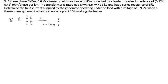Welcome to the channel. Let's move on to the next numerical. A three-phase 5 MVA 6.6 kV alternator with a reactance of 8 percent is connected to a feeder of series impedance of 0.12 plus j0.48 ohm per phase per kilometer. There is a transformer rated 3 MVA, 6.6 kV / 33 kV with a reactance of 5 percent.